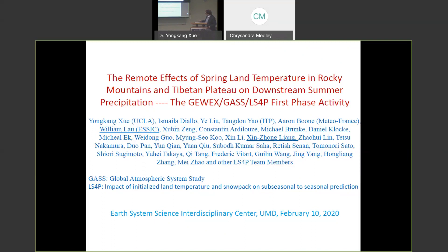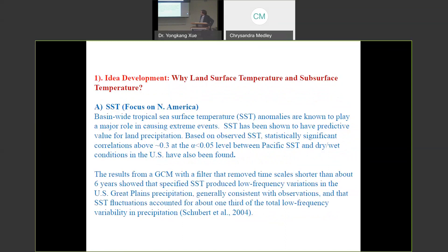My talk is mostly focused on the GEWEX GASS LS4P, the first phase activity. So LS4P is impact of initialization, initialized land surface temperature, and the snowpack on subseasonal prediction. So LS4P stands for the land surface snow for prediction, or S to the fourth. So we have 4S. The surface, subsurface temperature, subseasonal and seasonal prediction. And two faculty members in ESIC, Professor Liao and Professor Xin Zhongliang actively participate in this activity.